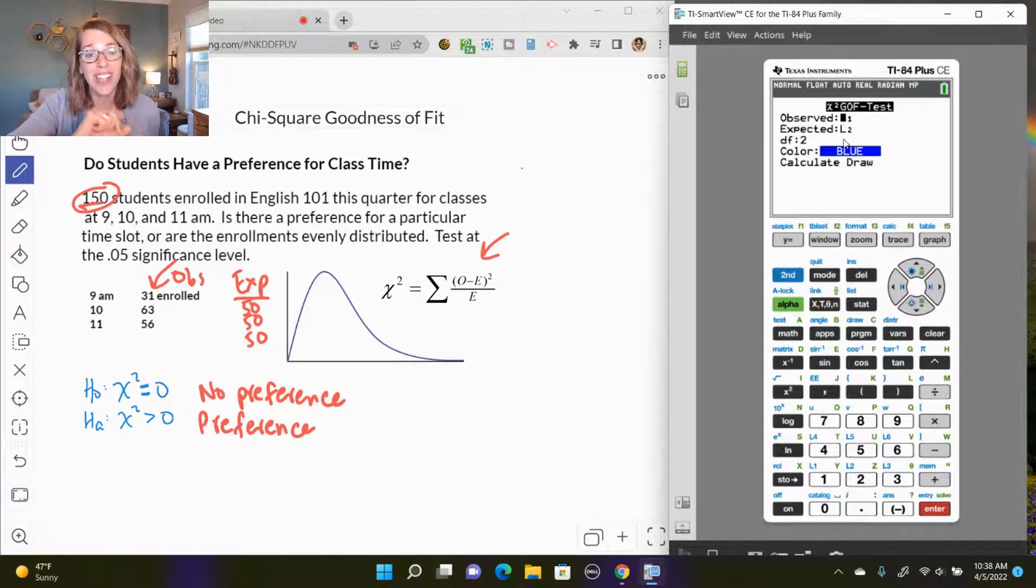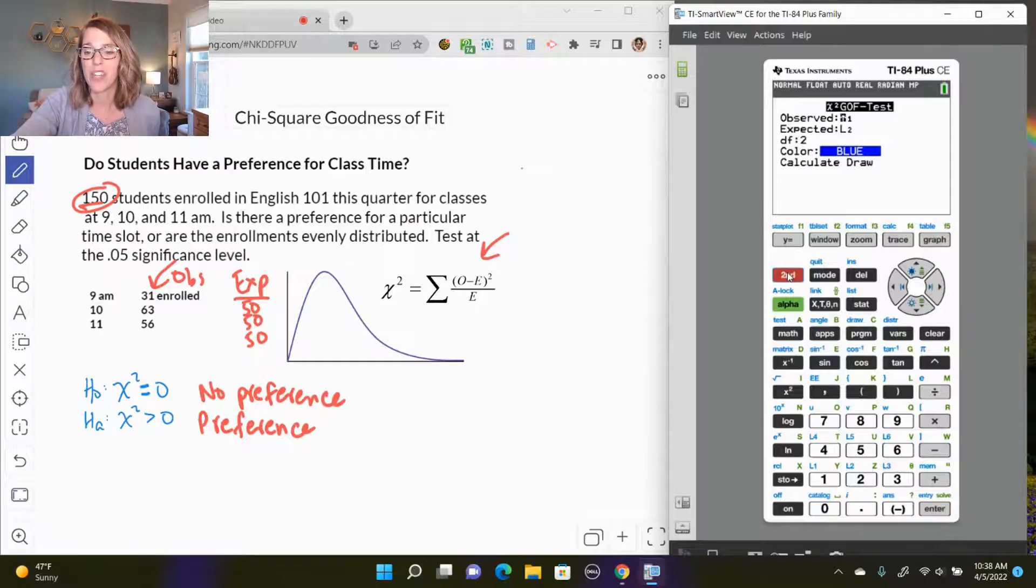I hit Enter, and my observed and expected I do have those in L1 and L2. If you need to change one of these, you would hit the second button followed by number one for L1, second followed by two for L2, and so on. You do need to change the degrees of freedom. I've got three data values minus one for degrees of freedom, so I do want two here.